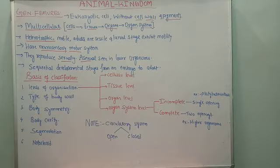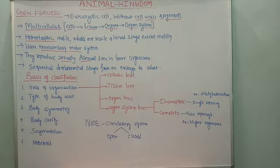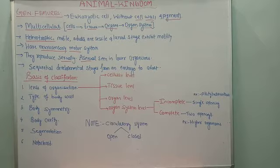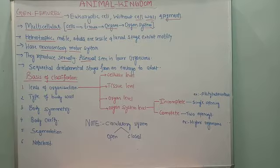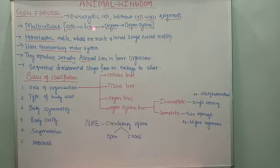Hello students. Today we are going to begin the new chapter under zoology, and this is Animal Kingdom. In the previous video we discussed the detailed aspects of Kingdom Plantae — general features, life cycle, and reproduction with respect to algae, bryophytes, pteridophytes, gymnosperms, and angiosperms. Today's topic, Animal Kingdom, carries 10 to 11 marks weightage and is very important from an exam point of view.